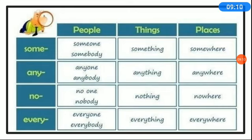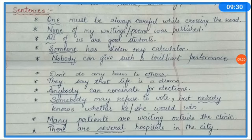So here, some words are listed in a tabular form. Like I told you — people, things and places — how these words are used under these categories. Just go through this, pause your video for a minute, go through these words, and then proceed with the sentence examples that we have.